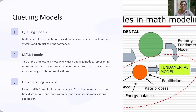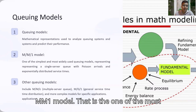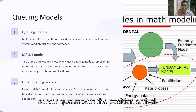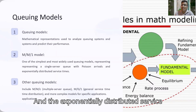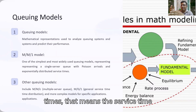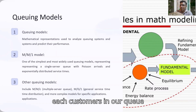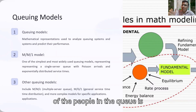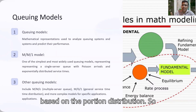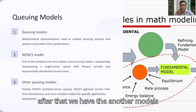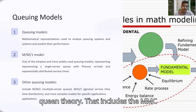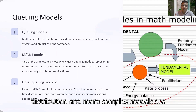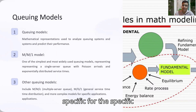There are different types of queuing models. The first is the M/M/1 model — one of the simplest and most widely used queuing models — representing a single-server queue with Poisson arrivals and exponentially distributed service times, meaning the service time provided to each customer is distributed by the exponential distribution and arrivals follow a Poisson distribution. Other models include M/M/c (multiple server queue), M/G/1 (general service time distribution), and more complex models for specific applications.